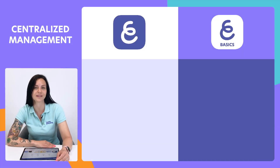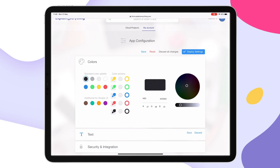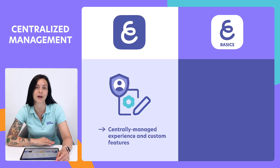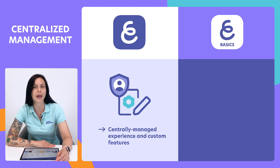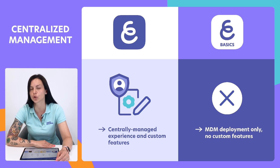On to centralized management. The cloud-enhanced Explain Everything Whiteboard makes it easy to centrally manage the experience of all of the users in your group. We provide flexible options for centralized license deployment, as well as numerous customized features, such as templates for groups, custom colors, and even custom clip art libraries. Some MDM deployment options exist in Explain Everything Basics too. This more basic version of our whiteboard can be deployed to user devices, but there is no further centralized management of either users or content.